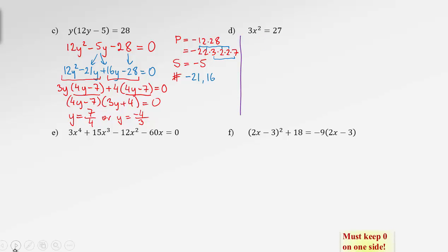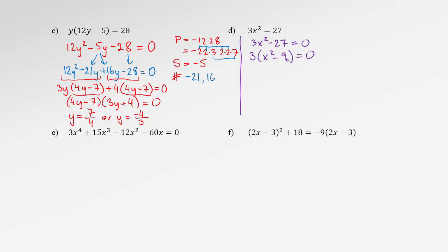Let's see example D. Remember, we must keep zero on one side. So we bring the 27 to the left: 3x squared minus 27 equals zero. We factor out the 3, leaving x squared minus 9. That's a difference of squares, so we factor again into x minus 3 and x plus 3, equals zero. We now have three factors. The constant 3 will never be zero, so it produces no roots. From the first bracket, x equals 3, and from the second bracket, x equals negative 3. Those are the two solutions.